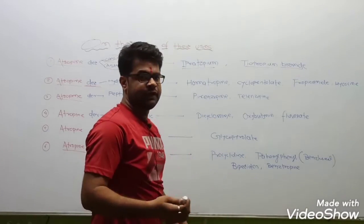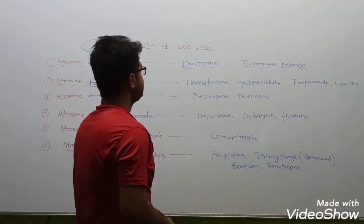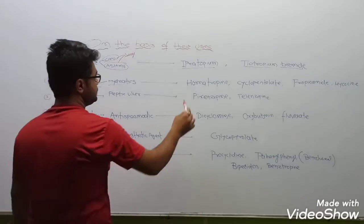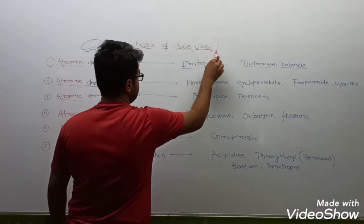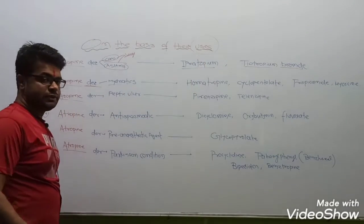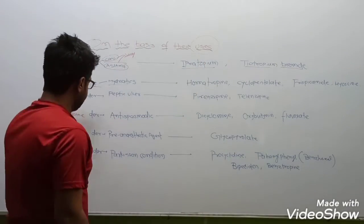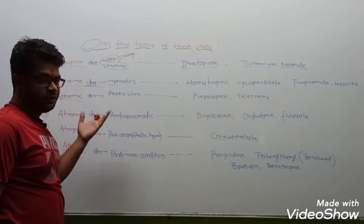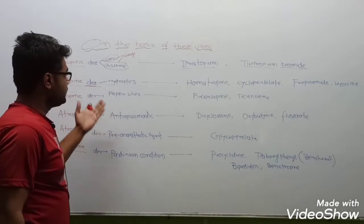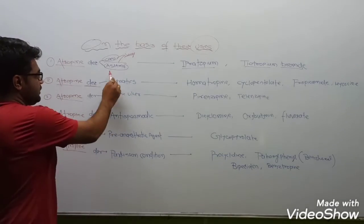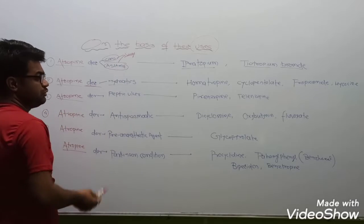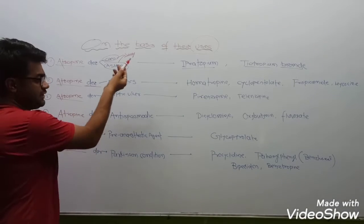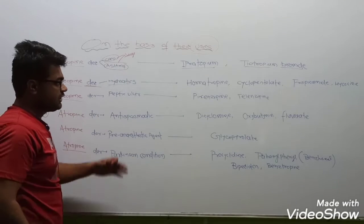Anticholinergic drugs — particularly noteworthy uses. Atropine derivatives used in COPD: in chronic obstructive pulmonary disease, a chronic condition. The drugs of choice for COPD and asthma are 2 drugs: ipratropium and tiotropium bromide.